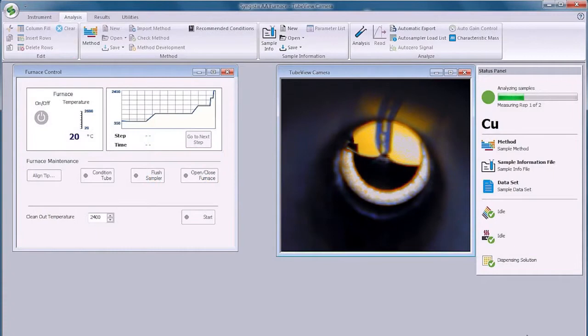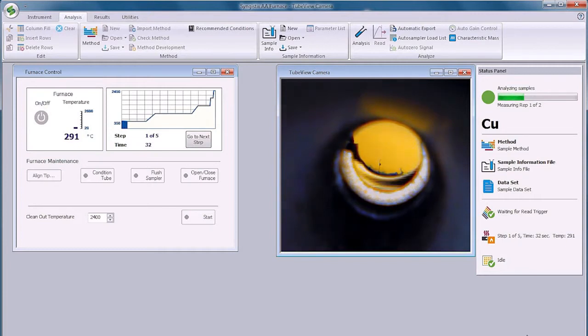Care is required when developing a new furnace program or changing parameters from the default method. Poor drying conditions can result in sample spattering inside the tube, degrading sensitivity and precision.